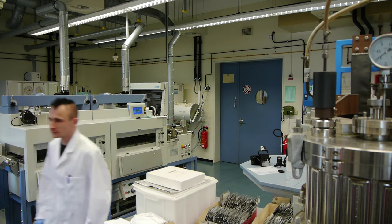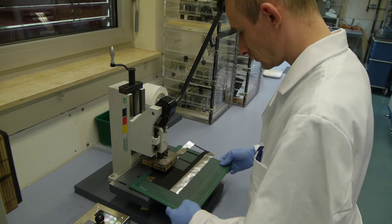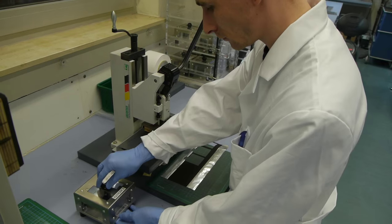Next, the scientist cuts the calendared sheet into strips, which are suitable for a specific electrode size, and provides them with a small, uncoated strip, the conducting tap.